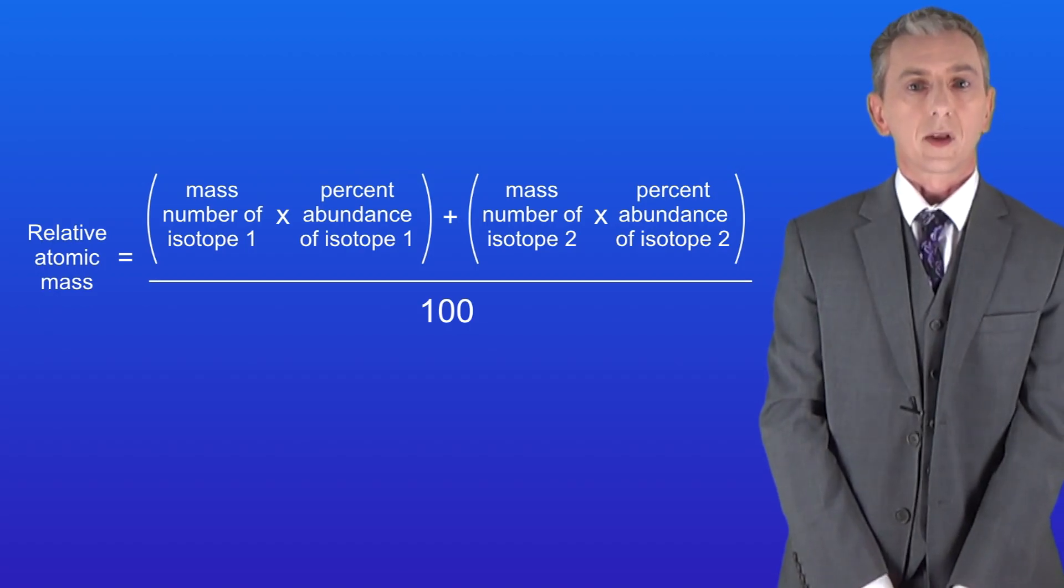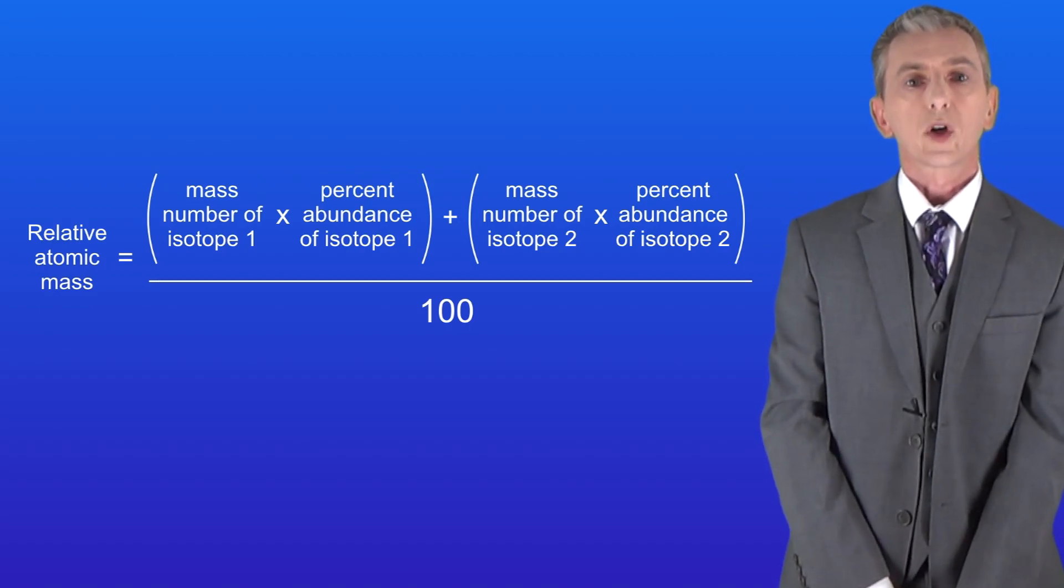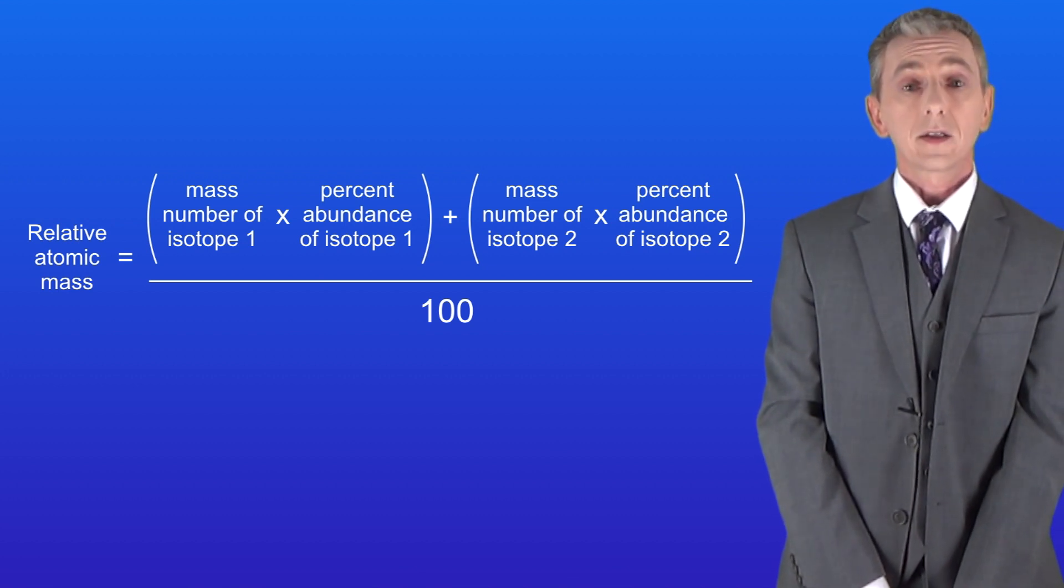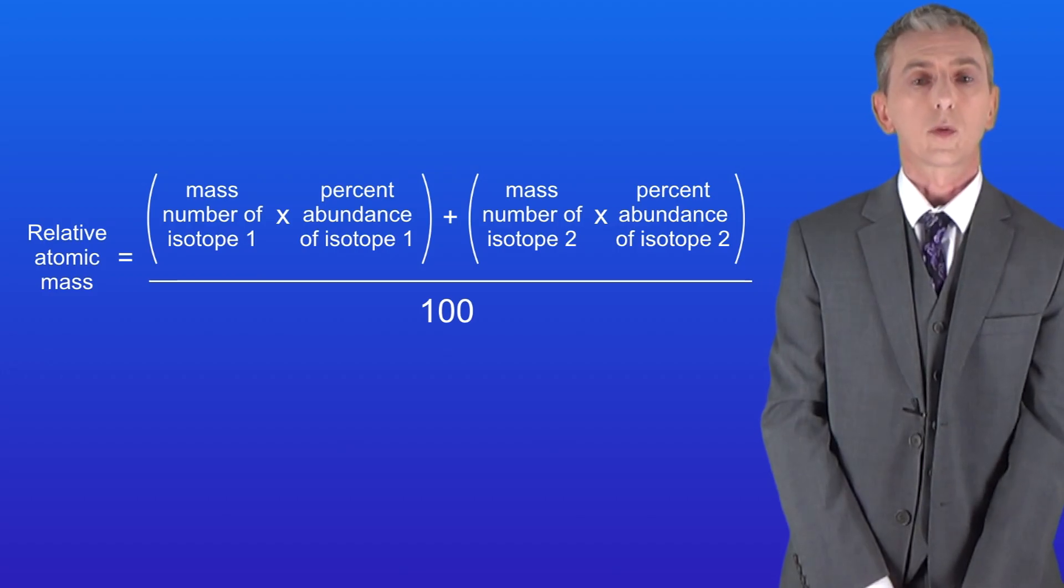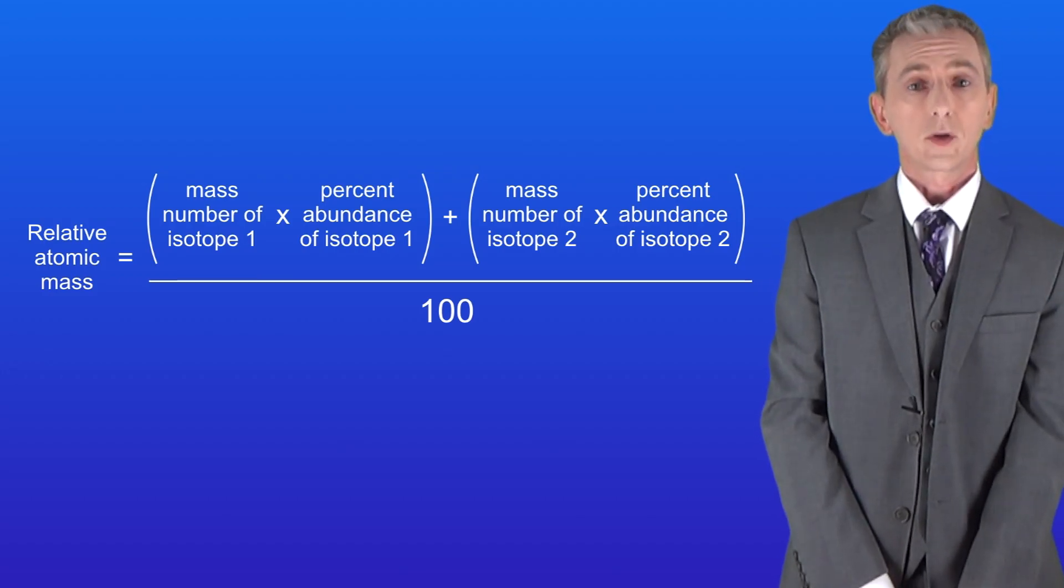The relative atomic mass is the mass number of isotope 1 multiplied by the percent abundance of isotope 1. This is then added to the mass number of isotope 2 multiplied by the percent abundance of isotope 2 and we divide all of this by 100.